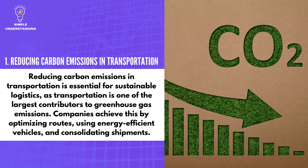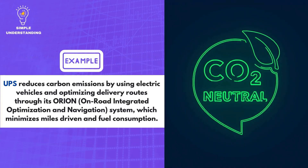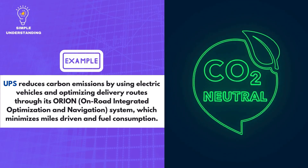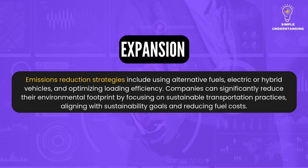1. Reducing Carbon Emissions in Transportation. Reducing carbon emissions in transportation is essential for sustainable logistics, as transportation is one of the largest contributors to greenhouse gas emissions. Companies achieve this by optimizing routes, using energy-efficient vehicles, and consolidating shipments. UPS reduces carbon emissions by using electric vehicles and optimizing delivery routes through its Orion on-road integrated optimization and navigation system, which minimizes miles driven and fuel consumption.